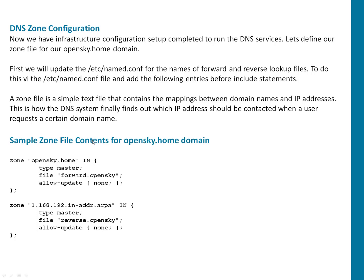That configuration is for opensky.com forward lookup. After that I have one entry for reverse lookup where I specify the reverse of IP address 192.168.1 — getting rid of the last octet which is the DNS IP — and specifying a reverse file here. Again this is an IN (internet) record, it's master, for reverse lookup use this particular file, and allow-update is none. So this is what I'm going to put in /etc/named.conf to configure the opensky.com zone.